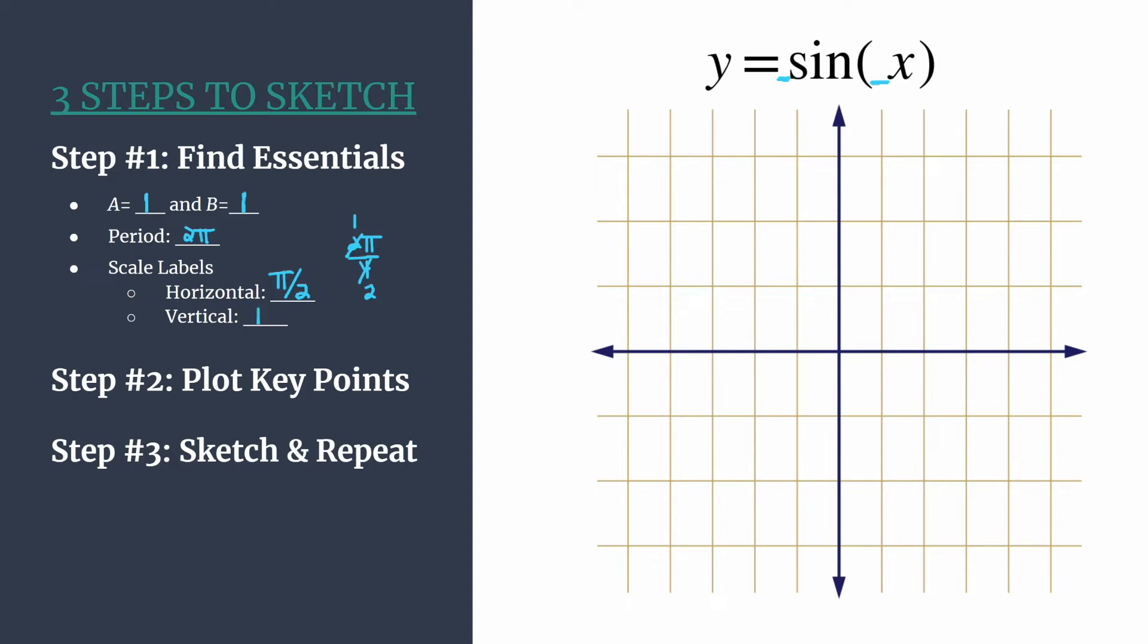Let's label our axes. Horizontally we should be counting by pi over two, so one pi over two, two pi over two which of course reduces to pi, three pi over two, and four pi over two which reduces to two pi. Note that your fourth horizontal tick mark should always match your period with this method.